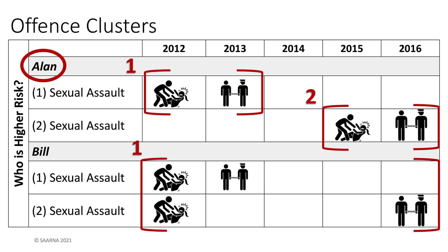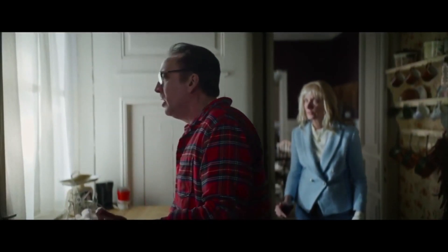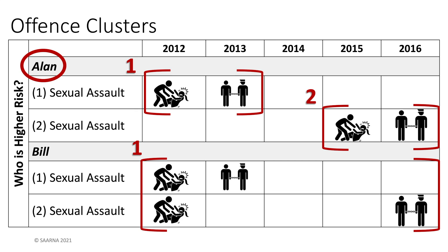Bill stopped offending in 2012. So when he was arrested in 2016, you can imagine how confused or frustrated he might have been. Bill's offenses are treated as one unit or cluster. The number of offending units or clusters an individual has provides us information about their offense persistence and response to supervision.